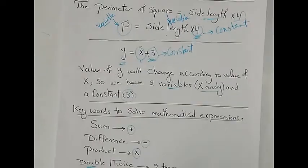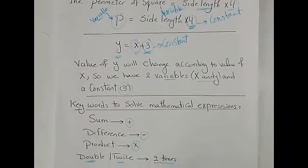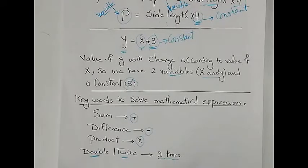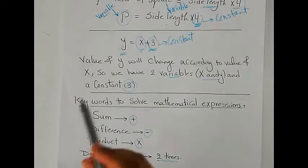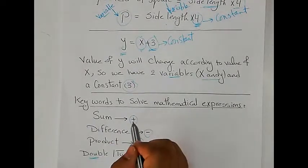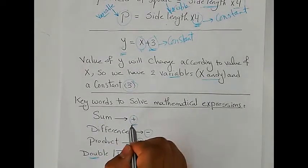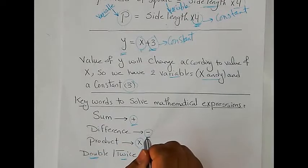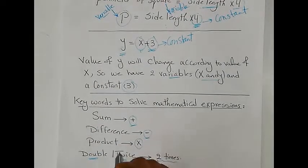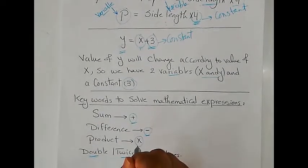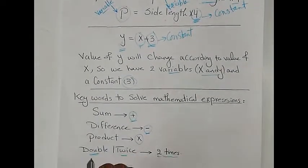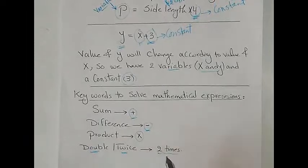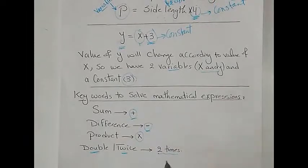Now let's look at some keywords used to solve mathematical expressions. 'Sum' means plus, 'difference' means minus, 'product' means times or multiply, and the words 'double' and 'twice' both mean two times.